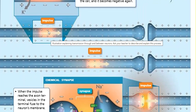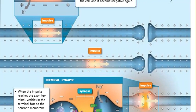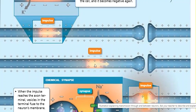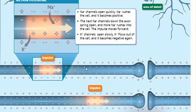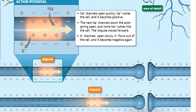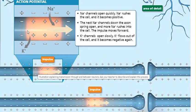This positive charge inside makes the signal move forward. As long as sodium keeps rushing into the cell, the signal keeps moving forward — you can see the signal move from one point to the next along the axon. At the same time, the potassium channels open, allowing potassium to diffuse out of the cell, bringing the cell back to its resting potential — negatively charged inside.